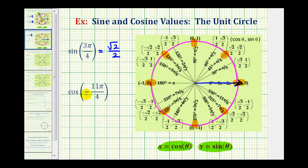Starting at the initial side, we'll count off negative 11 pi over four radians clockwise: negative one pi over four, negative two pi over four, negative three pi over four, negative four pi over four, negative five pi over four, negative six pi over four, negative seven pi over four, negative eight pi over four, negative nine pi over four, negative ten pi over four, and finally negative 11 pi over four.